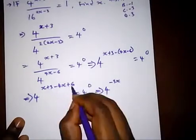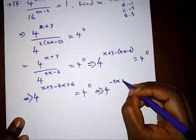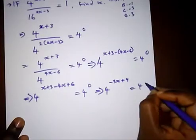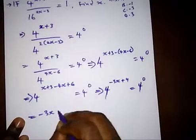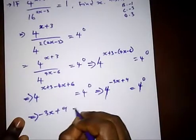And 3 plus 6 gives us plus 9 equal to 4 raised to power 0. This can cancel, and we are left with minus 3x plus 9 equal to 0.